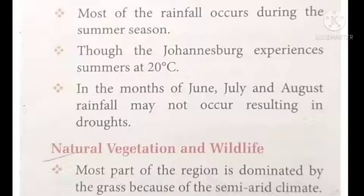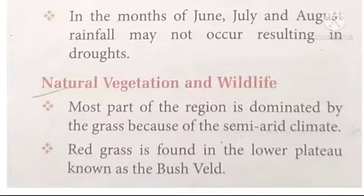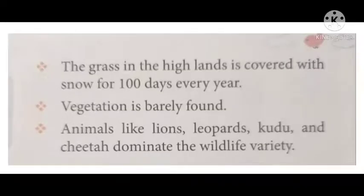Now, natural vegetation and wildlife. Most of the region is dominated by grass because of the semi-arid climate. Semi-arid means dry with little rain. There are no trees or jungle — it is only grass fields. Red grass is found in the lower plateau, known as the Bush Velds.